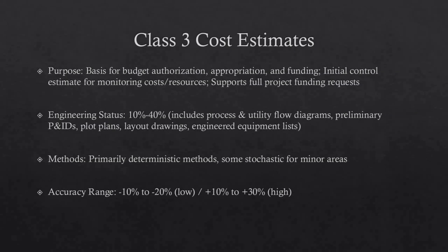Class 3 estimates are generally prepared to form the basis for budget authorization, appropriation, and/or funding. As such, they typically form the initial control estimate against which all actual costs and resources will be monitored. Typically, engineering is from 10% to 40% complete and would comprise at a minimum: process flow diagrams, utility flow diagrams, preliminary piping and instrument diagrams, plot plan, developed layout drawings, and an essentially complete engineered process and utility equipment list. Class 3 estimates are typically prepared to support full project funding requests and become the first project phase control estimate against which all actual costs and resources will be monitored for variations to the budget.